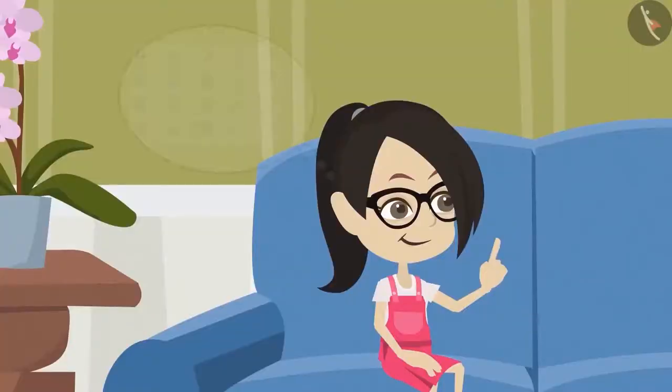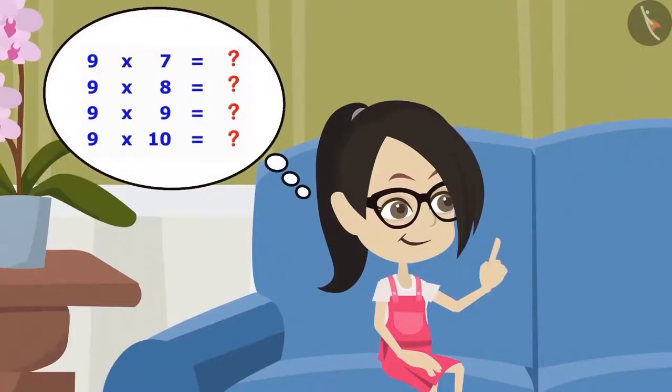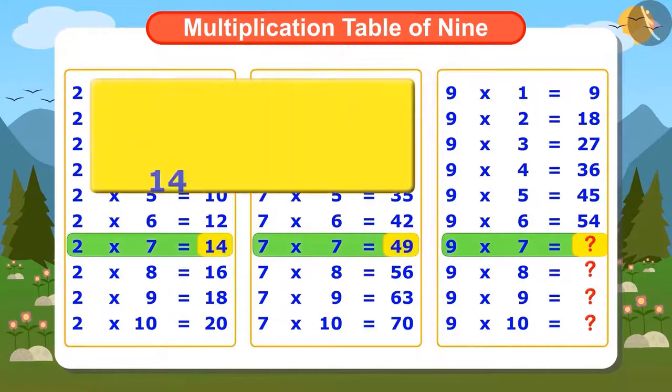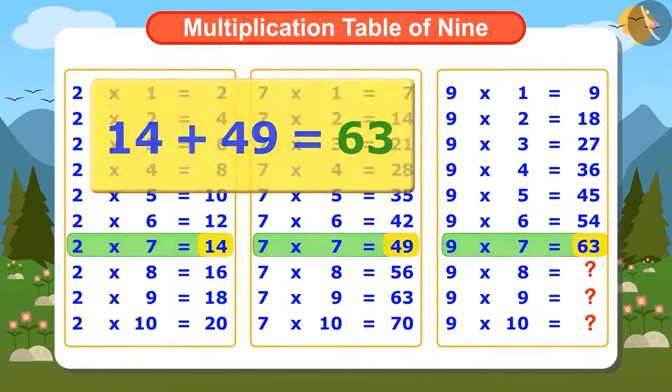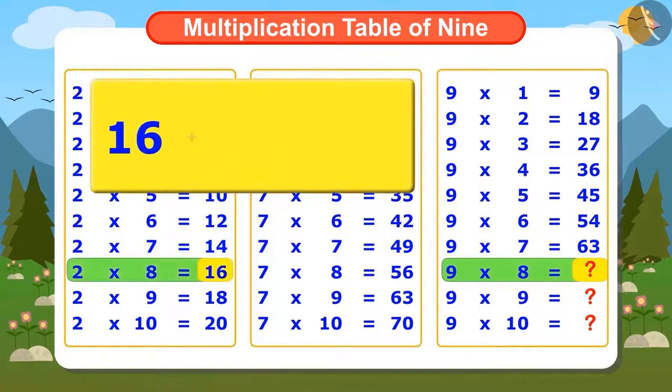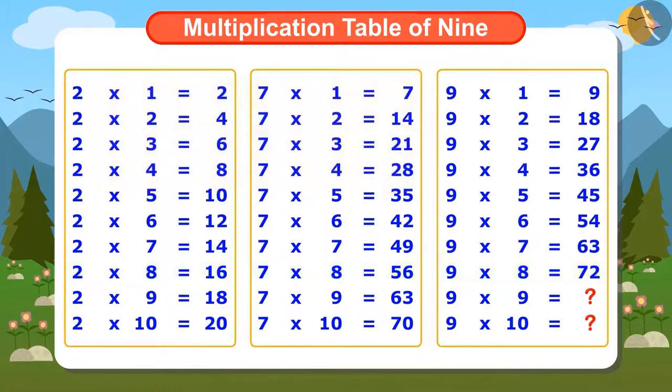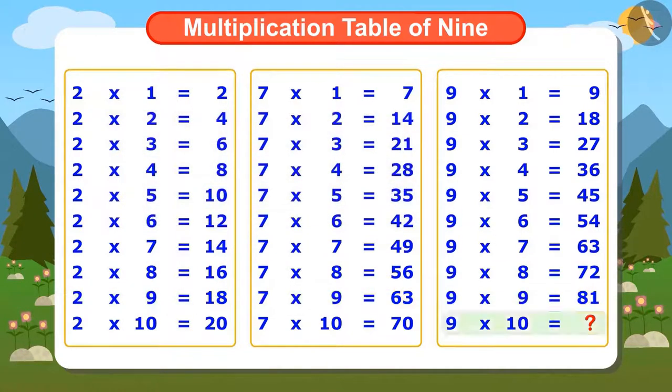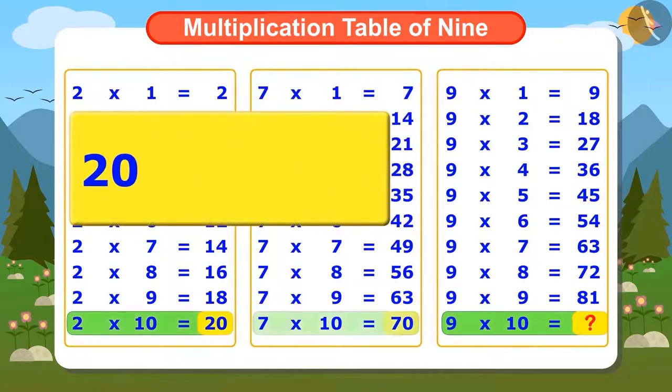Vandana wants to write the rest of the 4 numbers of the table 9 in a similar way. Now to find out 7 times 9, let's add the 7th number of the table of 2 and 7. 14 and 49. Answer is 63. If we add 16 and 56 to find 8 times 9, then the answer would be 72. To find 9 times 9, we will add 18 and 63. The answer is 81. Now let's add 20 and 70 to find the last number which is 90.